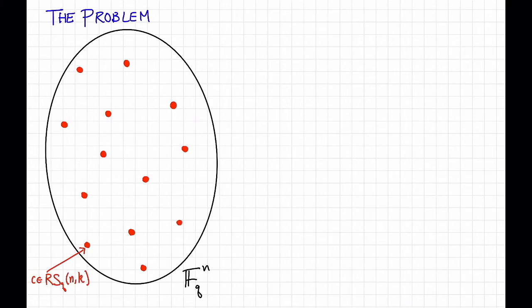So here's the problem. Suppose that this big blob here is all of fq to the n, and these red dots are the code words of some Reed-Solomon code of dimension k and length n over fq.